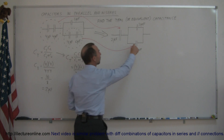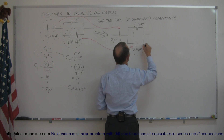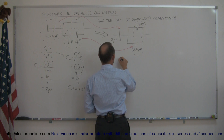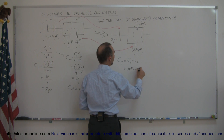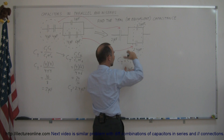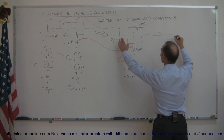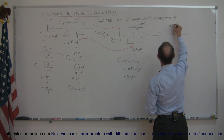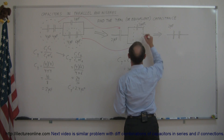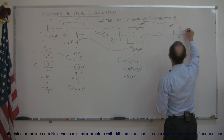The next step is to look at the two capacitors in parallel. Capacitors in parallel are simply added together, so C total equals C1 plus C2. In this case that's 3 microfarads plus 2.4 microfarads, which equals 5.4 microfarads. We redraw the circuit again, replacing these two parallel capacitors with a single 5.4-microfarad capacitor.